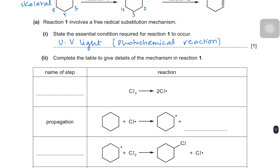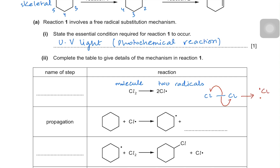In the beginning of the table, you can see that a chlorine molecule, which was stable, breaks down into two radicals. This is homolytic fission, where the chlorine–chlorine bond breaks so that both chlorine atoms each receive one electron and both become chlorine radicals. That is the initiation step, because this is how the reaction begins.